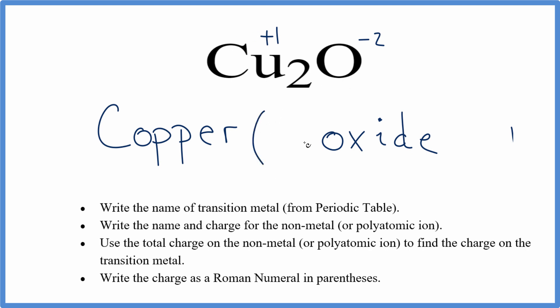When we write the name, we put parentheses and a Roman numeral I to show that. That makes the name for Cu2O copper (I) oxide.